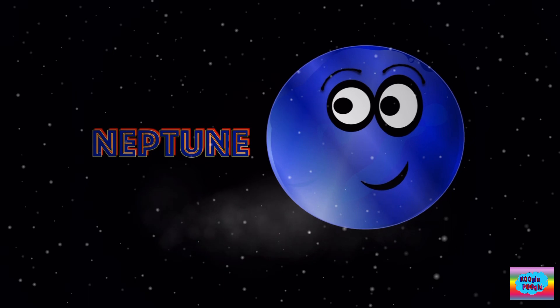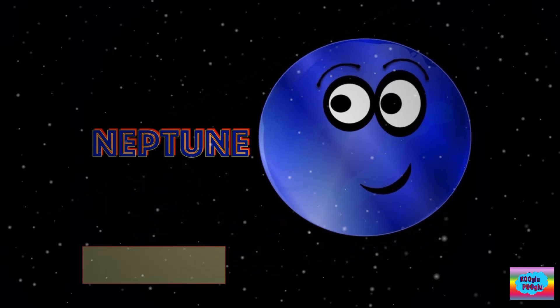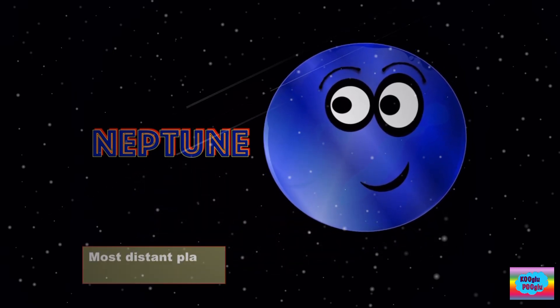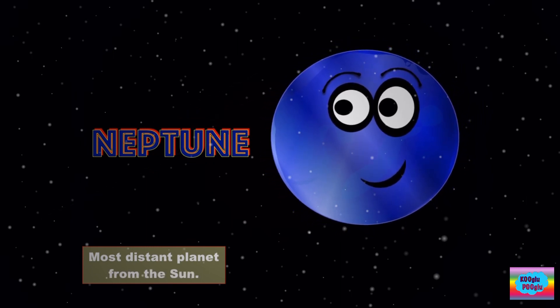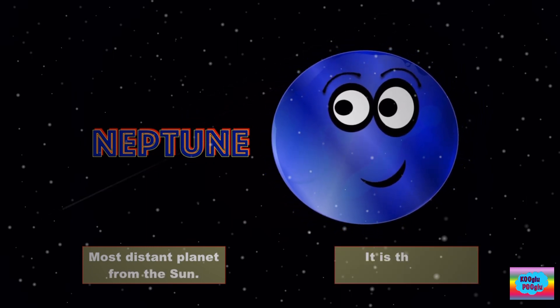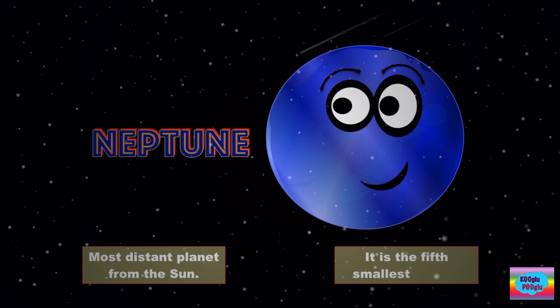Let's go on to number five, Neptune. Most distant planet from the sun. I'm far away from the brightness. It's the fifth smallest planet, and the radius is 24,622 kilometers.